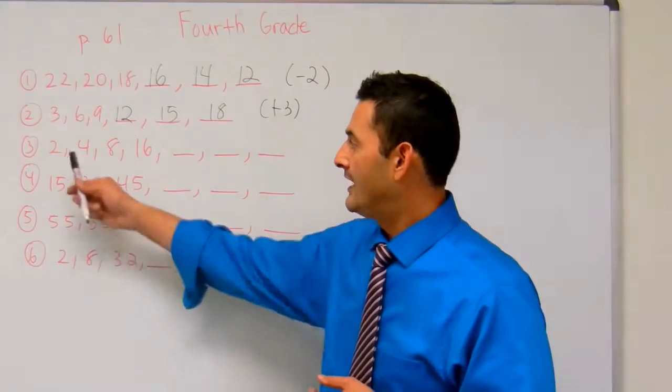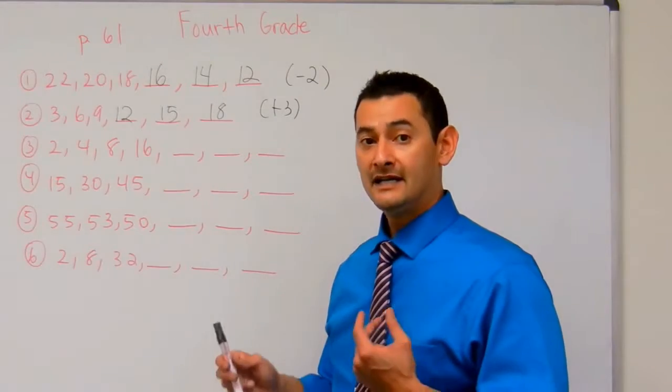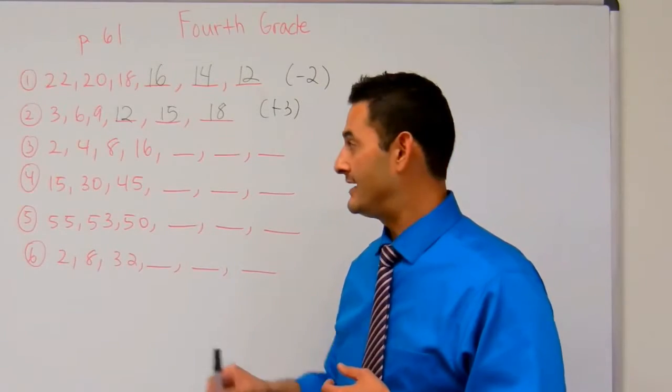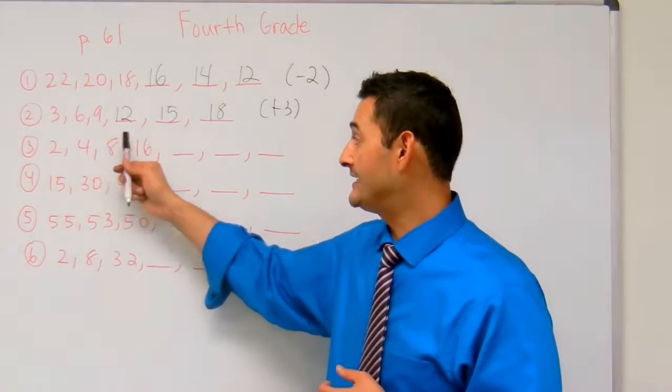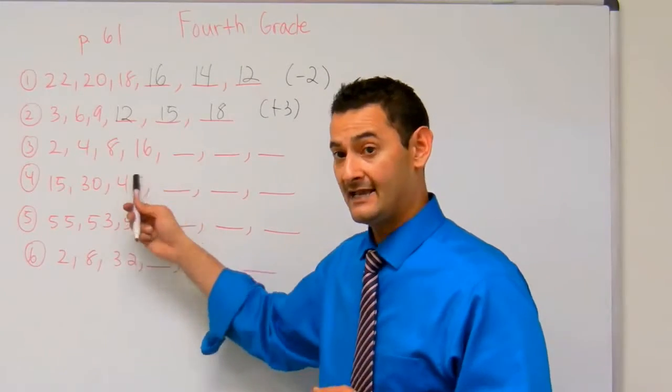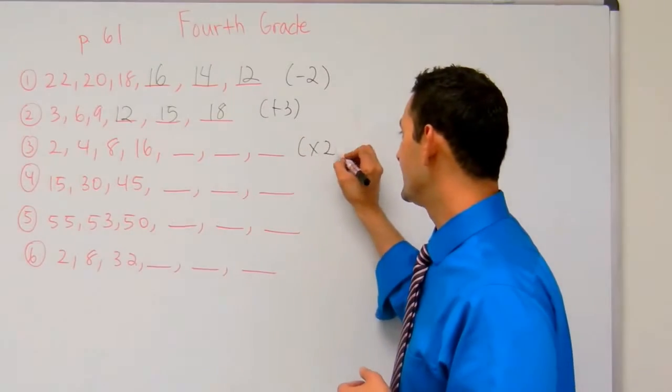Let's try a different way. How about 2 times 2? Is 2 times 2 equal to 4? Yes. How about 4 times 2? Is that 8? Yes. How about 8 times 2? Is that 16? Yes. So we're multiplying. It's going to be times 2.